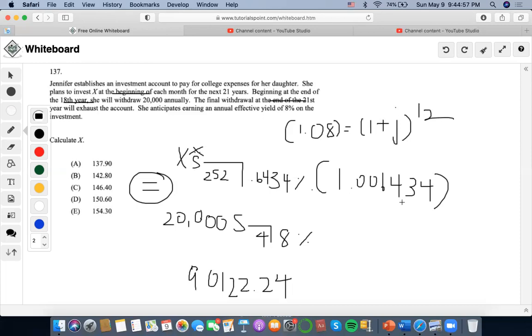To find X, I divide $90,122.24 by 630.98. This gives us X equals $142.82, which is the answer.